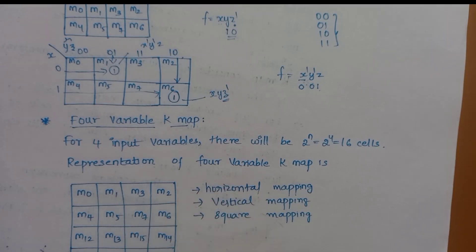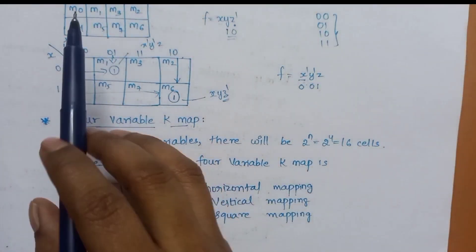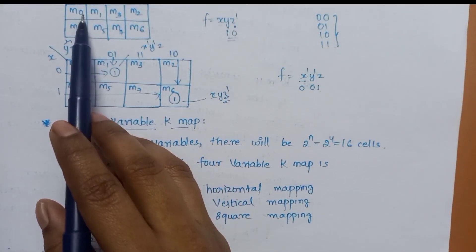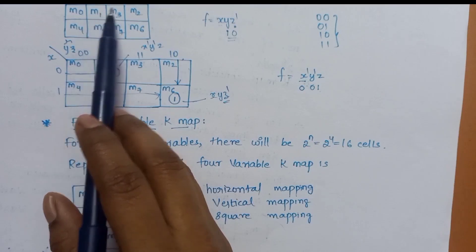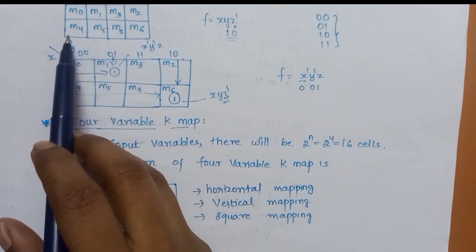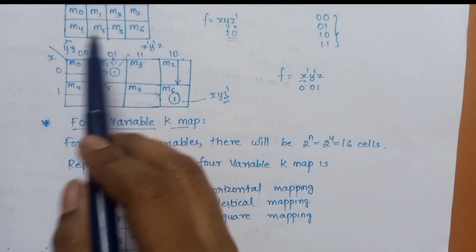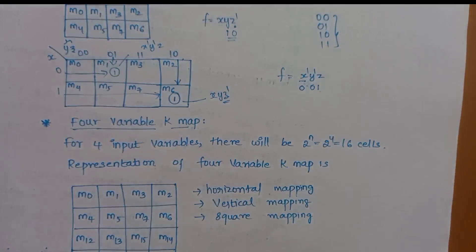The 3-variable K-map cells are labeled m0, m1, m2, m3, m4, m5, m6, m7.